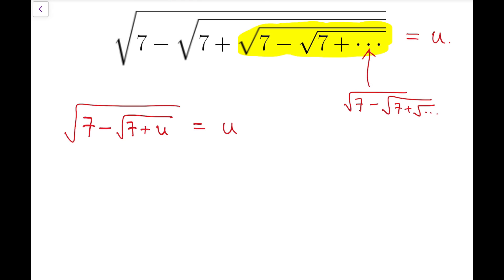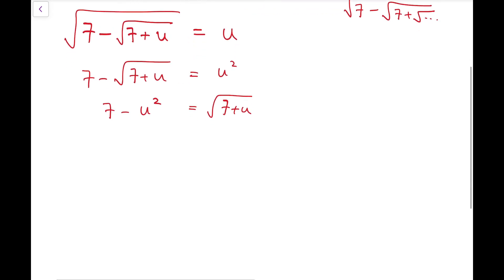So, we square both sides, and we have 7 minus the square root of 7 plus u, and that's equal to u squared. And so, by rearranging, we have 7 minus u squared equal to square root of 7 plus u. Next, I'm going to square both sides again, so then there will be no more radical sides. 7 minus u squared all squared is equal to 7 plus u.